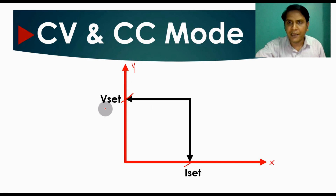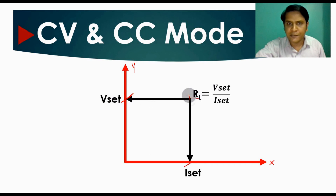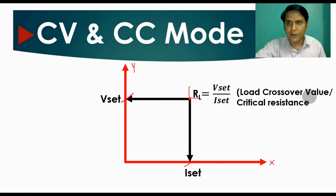Let us say you have a power supply and in that power supply you have set some current limit called I-set and some voltage limit called V-set. If you draw these two lines on the graph, you can see there is a point where V-set and I-set cross each other. This point is called the load crossover value.